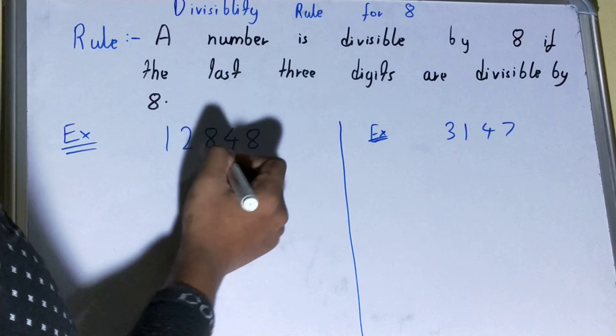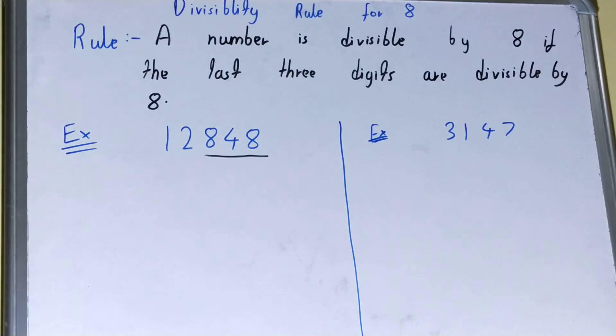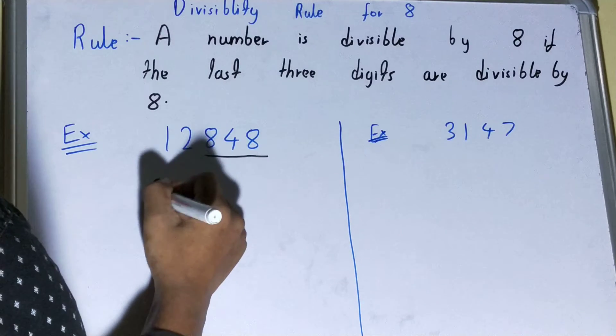Let's try it with this one. In this, the last three digits are 848. We'll bring it down.